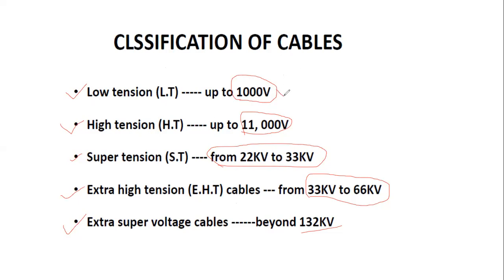To summarize the classification by voltage levels: low tension cables are used up to 1000 volts, high tension cables up to 11,000 volts, super tension cables 22 to 33 kilovolts, extra high tension cables 33 to 66 kilovolts, and extra super voltage cables up to 132 kilovolts.